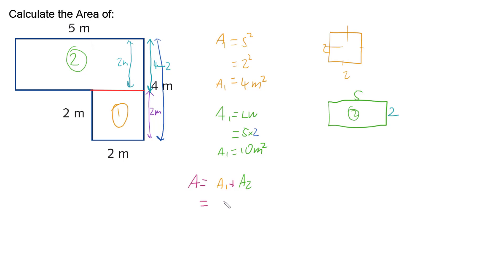And so doing that, we've got our first area was 4 plus our second area which was 10. And so our total overall area is 14 meters squared.